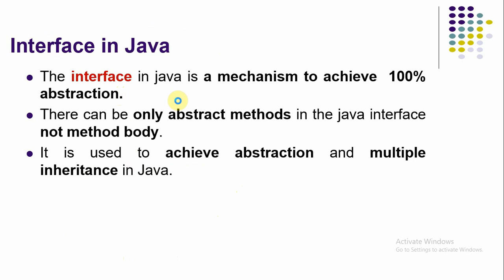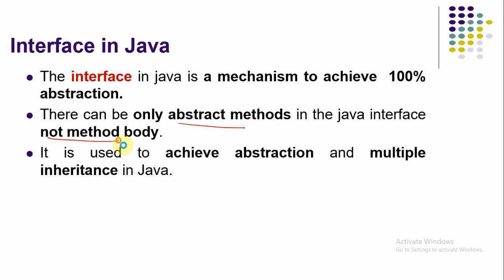Interface is a mechanism by which we can implement 100% abstraction in software application development. Since it is 100% abstraction, in an interface we can have only abstract methods. An abstract method means there is no implementation logic — there is no method body, only the method declaration.